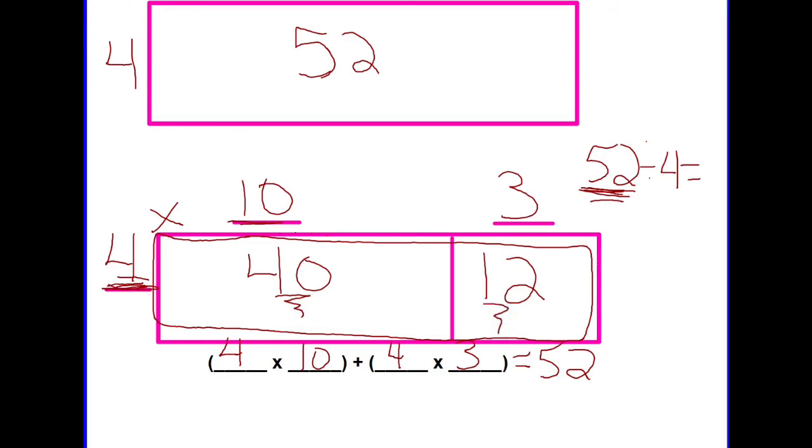What I need to do is take my 10 and 3 and add them together. 10 plus 3 equals 13, and that is going to be my answer to my division problem, my quotient. 52 divided by 4 is 13.